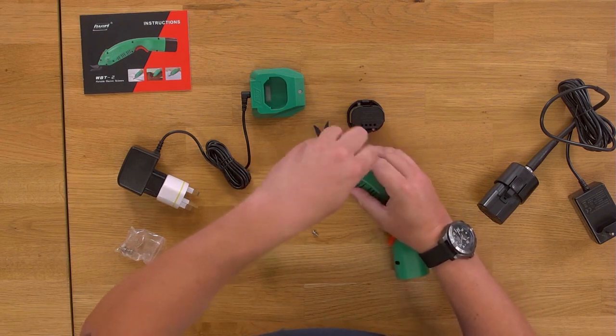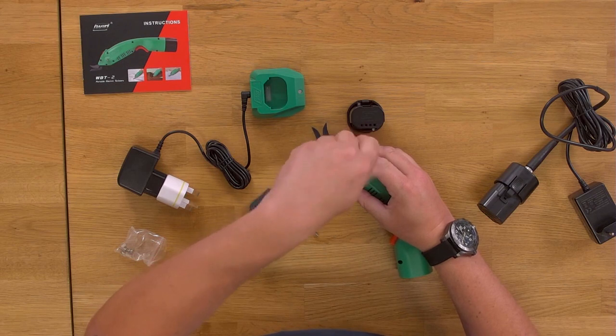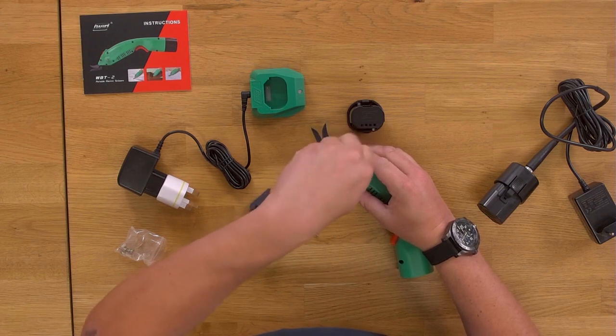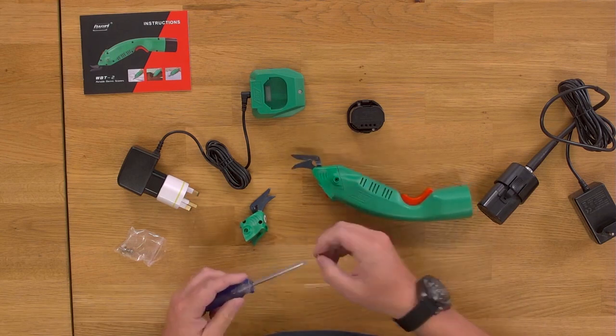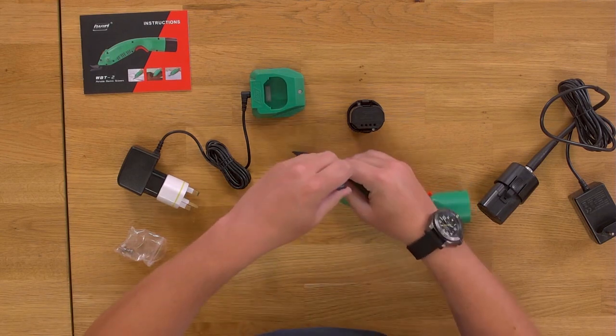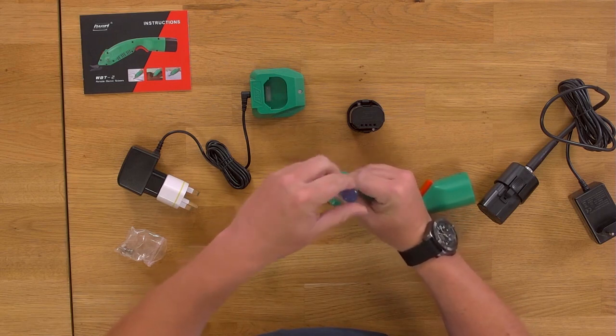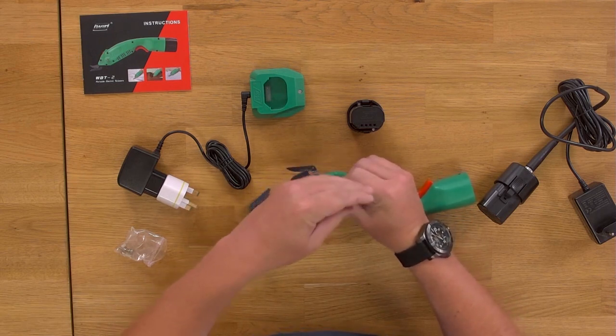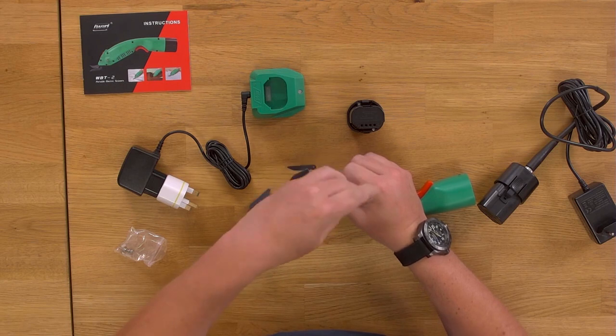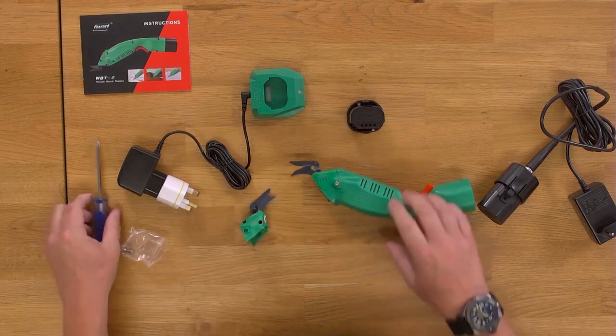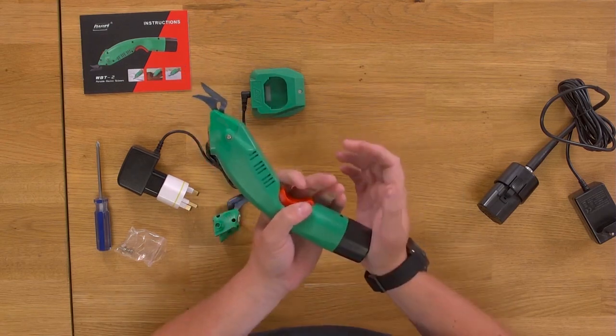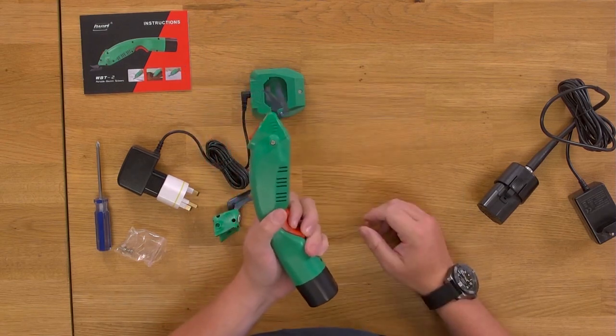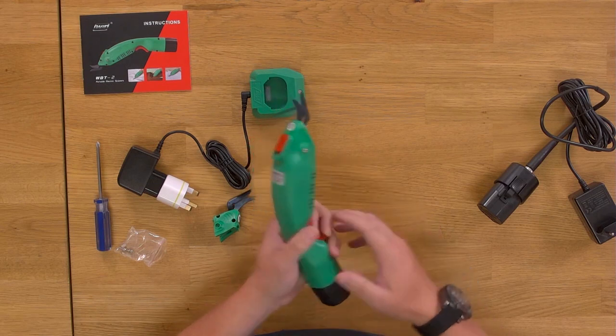In reality I don't think you'll change the head very often at all. The blunt head will cut through quite thick fabric - we'll find some in a moment and show you. So I don't think you'll be changing heads all the time, it'll just be as and when if you need to cut something thicker. We've got the cutting head installed. The battery just goes into the bottom like that, and then you just squeeze the trigger to cut - simple as that.